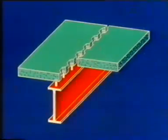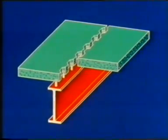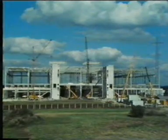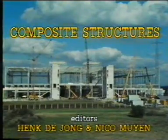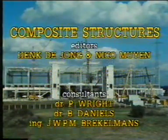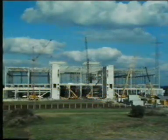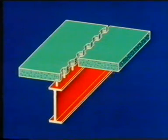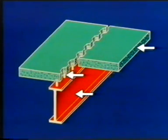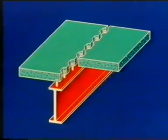Is steel or concrete the most economical solution? Or could a combination of the materials offer the greatest benefits? This is the idea behind composite structures. A composite structure is basically a combination of a steel frame and a concrete topping, connected by shear connectors. The steel frame mainly carries the tensile forces. The concrete carries the compressive forces, and at the same time may serve as a floor.